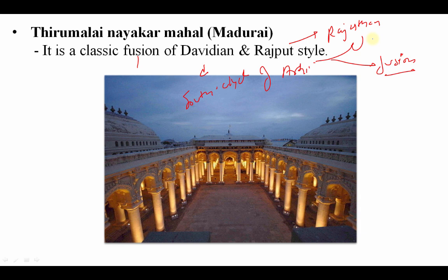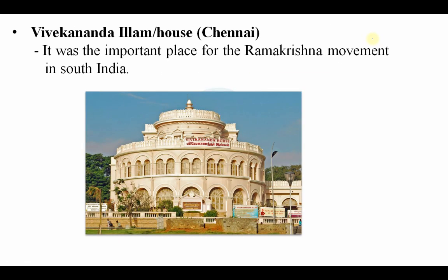Thirumalai Nayakar Mahal is in Madurai. Vivekananda House, also known as Ice House, is in Chennai — it was an important place for the Ramakrishna movement in south India. Vivekananda was a disciple of Ramakrishna Paramahamsa, who was a priest in the Kali temple and started the Ramakrishna movement to help those in need.